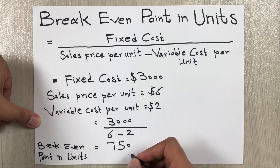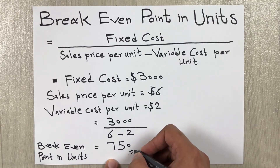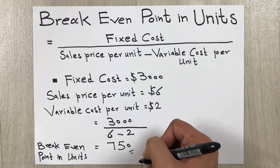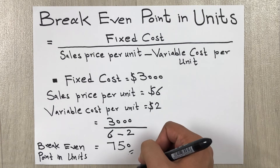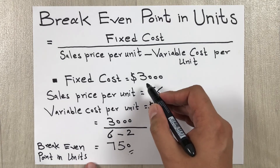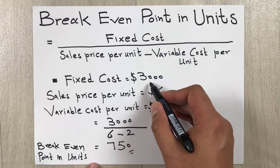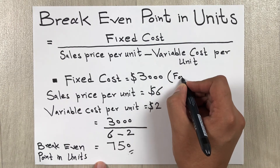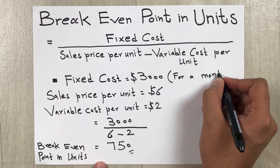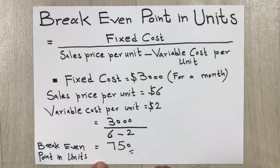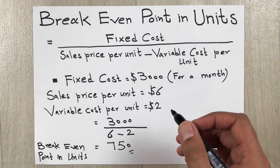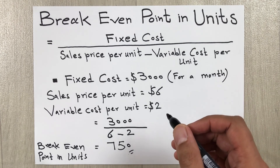This means we have to sell 750 units a month to reach the break-even point. The fixed cost of three thousand dollars mentioned here is for one month. This is how you can calculate the break-even point in units.